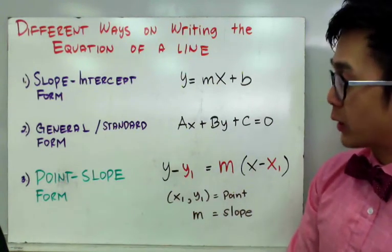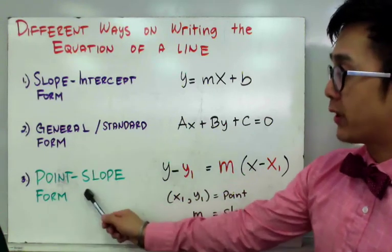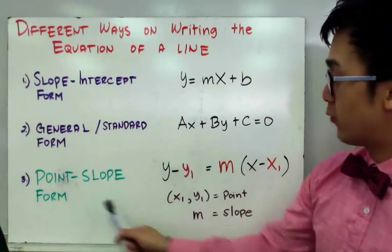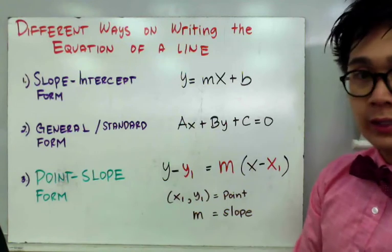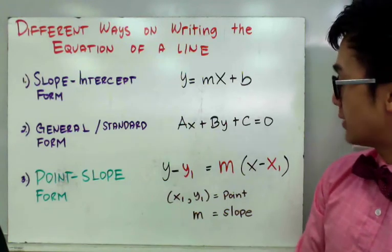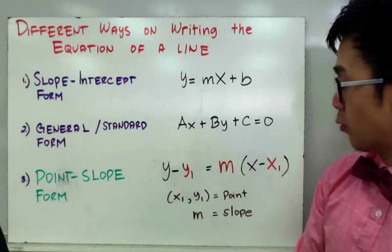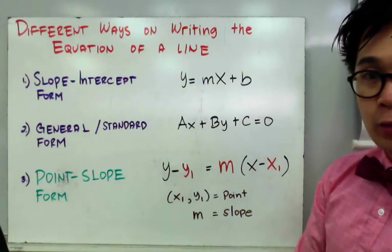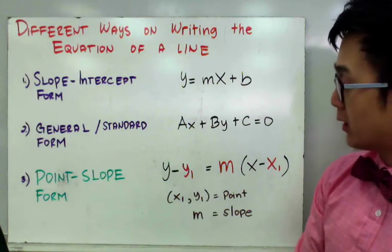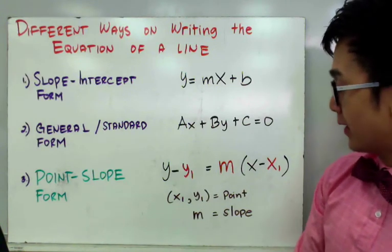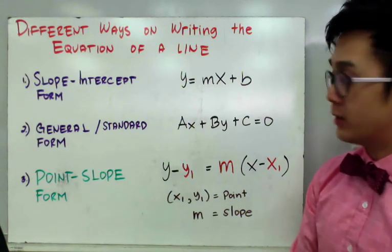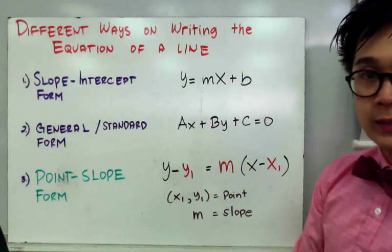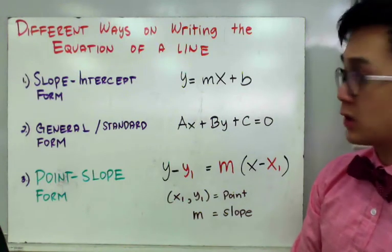For today, we're going to concentrate on the point-slope form, given by the formula y minus y-sub-1 equal to m times x minus x-sub-1, where x-sub-1 and y-sub-1 is the given point on that particular line, and m is the slope.